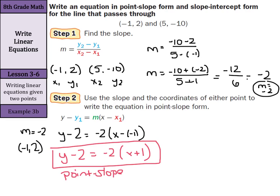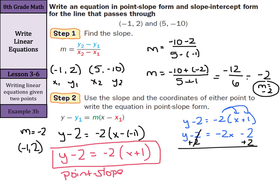Going into slope-intercept form, we need to distribute again. So y minus 2 equals negative 2 times x plus 1. Distribute: y minus 2 equals negative 2x, and negative 2 times 1 is negative 2, so minus 2. Now add 2 to both sides to get y alone. So y equals negative 2x, and negative 2 plus 2 is 0, so just y equals negative 2x. And that is my slope-intercept form.